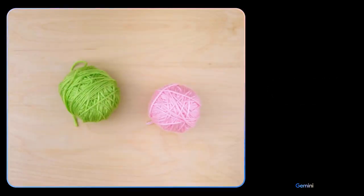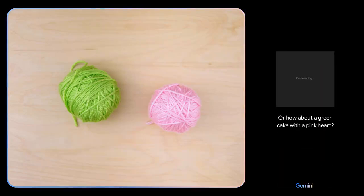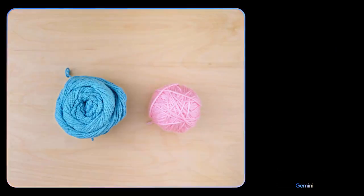Give me some ideas for what I could make with this. I see pink and green yarn. How about a dragon fruit or how about a green cake with a pink heart? Okay. How about these colors? And maybe show me some animals.